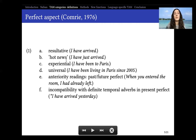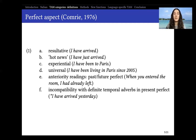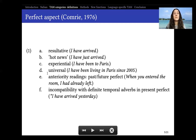Then we have the hot news function, something like 'I have just arrived,' meaning immediately before. Then the experiential function: 'I have been to Paris,' meaning at some point in my life up until now. Then the universal function: 'I have been living in Paris since 2005,' a continuous state that started in the past but continues at present. And then we have the anteriority readings — in English, past and future perfect — for example, 'When you entered the room, I had already left,' where 'had already left' is anterior to the reference time.